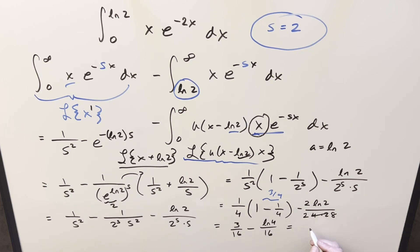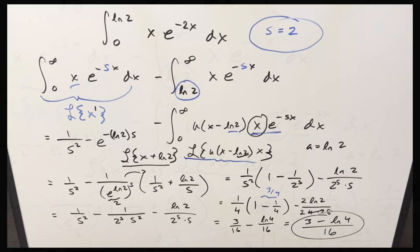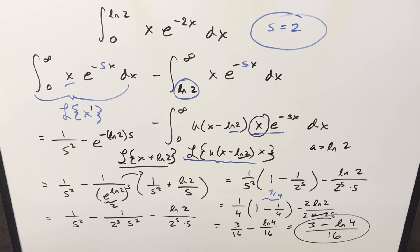Then putting it together for my final solution, we have 3 minus Eln 4 over 16. And that's it. Okay, so there you go. Really nice method just using Laplace transforms and the unit step function. Thanks everyone for watching. Have a good day.